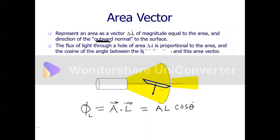The light is going in this direction, but the area vector of the area through which the light passes is oriented differently. The angle theta is the angle between these two. So to find the flux of the light, we just find the dot product of the area vector and the light vector. The dot product is just the product of the magnitudes and the cosine of the angle between the two vectors.